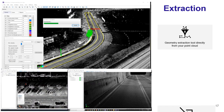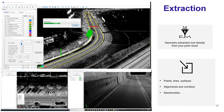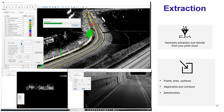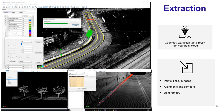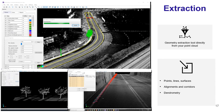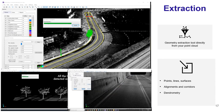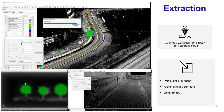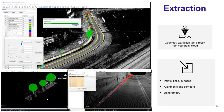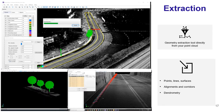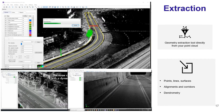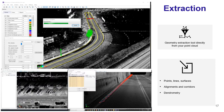For feature extraction, you can extract features directly within the point cloud using tools that allow you to extract points, lines, and surfaces using alignments and corridors. There is also a tree geometry tool that can extract trees in an urban environment and provide measurements such as crown diameter, trunk radius, and trunk height.